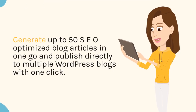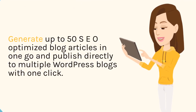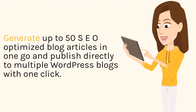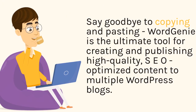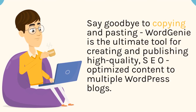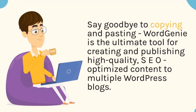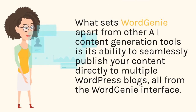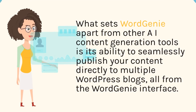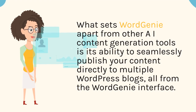Generate up to 50 SEO-optimized blog articles in one go and publish directly to multiple WordPress blogs with one click. WordGenie is the ultimate tool for creating and publishing high-quality, SEO-optimized content to multiple WordPress blogs. What sets WordGenie apart from other AI content generation tools is its ability to seamlessly publish your content directly to multiple WordPress blogs, all from the WordGenie interface.